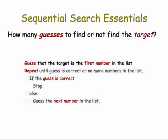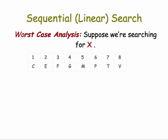So we can boil sequential search down to this simple algorithm expressed in pseudocode. The first guess is to guess that the target is the first number of the list, and then you repeat guessing until you're correct or there's no more numbers in the list. If the guess is correct, you stop. Otherwise, you guess the next number in the list.